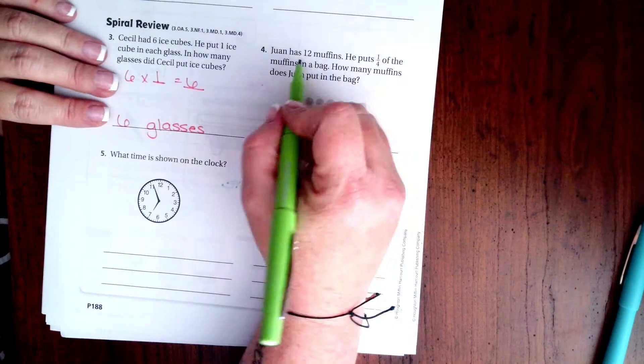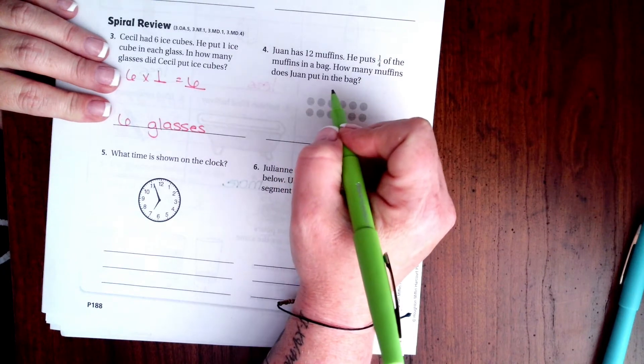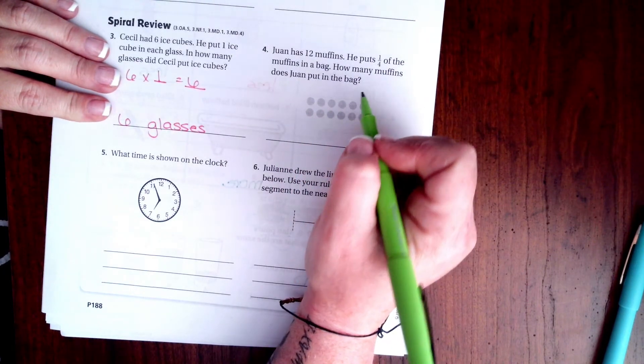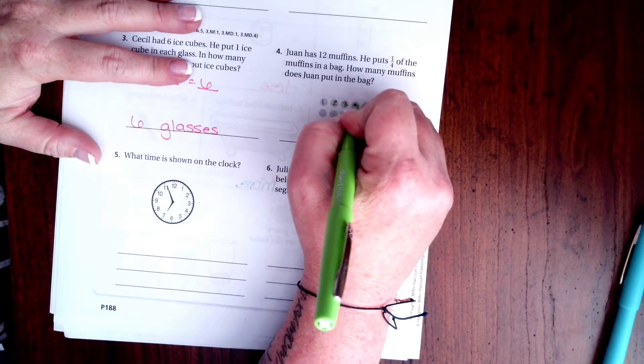All right, Juan has 12 muffins. He puts a quarter of the muffins into a bag. How many muffins does Juan put into a bag? So I can sit here and I can go one, two, three, four.